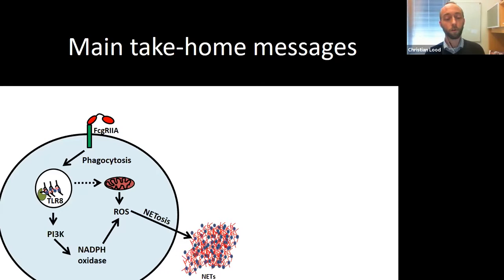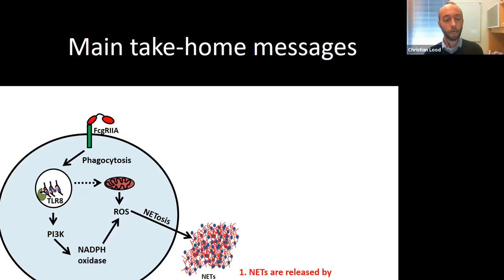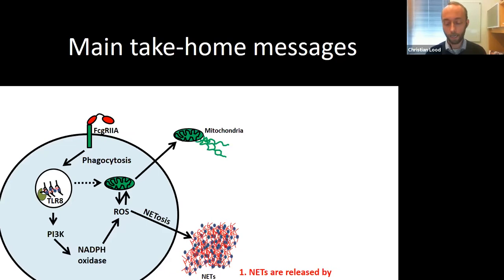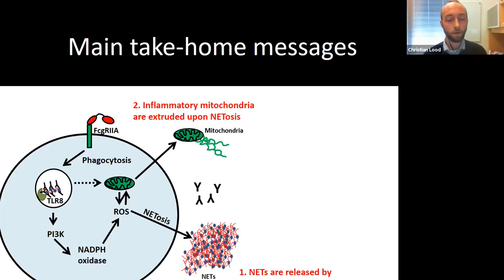NETs can be released from these dying neutrophils — this will be the first key point today. Another important aspect of neutrophil biology is that during oxidative stress, the mitochondria itself may be oxidatively damaged, resulting in the release of highly oxidized mitochondrial DNA, inducing inflammation through the DNA-sensing cGAS-STING pathway. We will also discuss anti-NET antibodies and antibodies targeting mitochondria and their implications in lupus and other conditions.